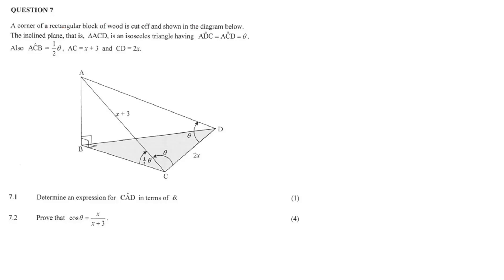A corner of a rectangular block of wood is cut off as shown in the diagram below, and the incline plane is triangle ACD. So that's going to be the main triangle that we're working in.